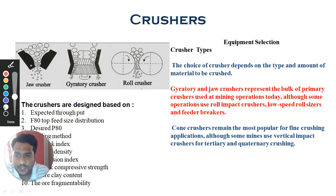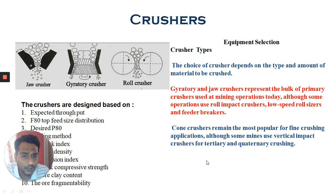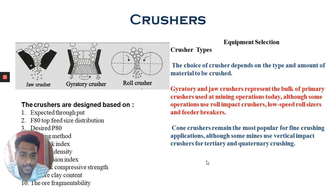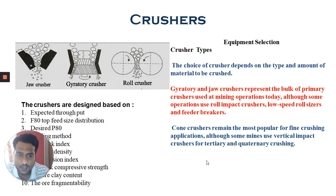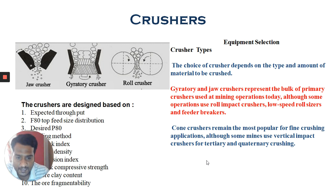Although some operations use roll crushers, roll impact crushers, low-speed roll sizers — also called free breakers or feeder breakers — cone crushers remain the most popular for fine crushing applications. Some mines also use vertical impact crushers, which are currently more in the research field for achieving optimum energy efficiency and required product size distributions for tertiary and quaternary crushing.